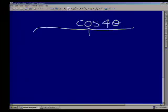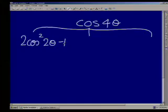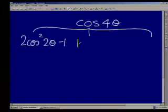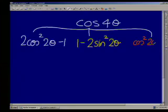It could be equal to 2cos²(2θ) - 1, that would be one formula. It could be 1 - 2sin²(2θ) or it could be cos²(2θ) - sin²(2θ).